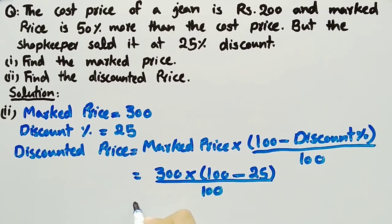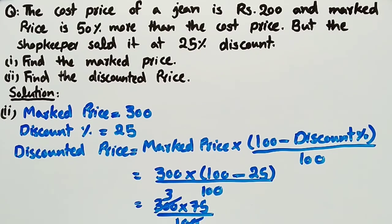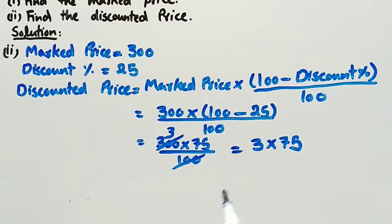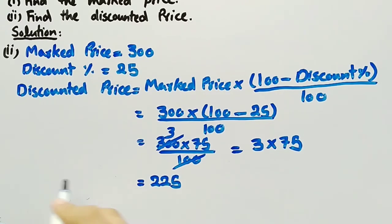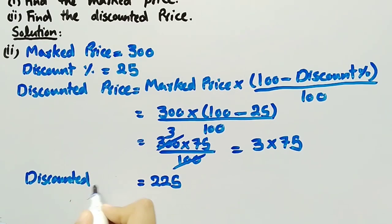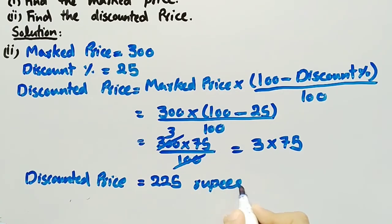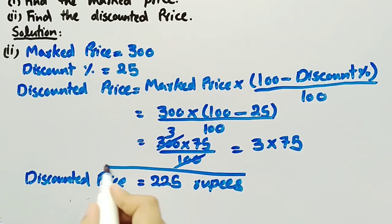100 minus 25 is equal to 75, divided by 100. 3 times 100 is 300, so it will be cancelled out, and we are left with 3 multiplied by 75. 3 times 75 is equal to 225, which means the discounted price is equal to Rs. 225. And this is the solution of part 2.